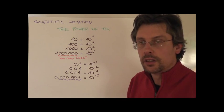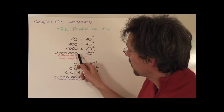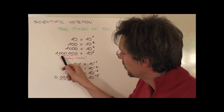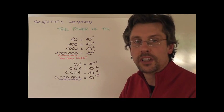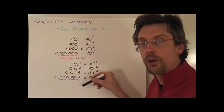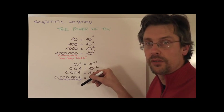And it's very easy, because you just have to count how many times you have to move your decimal point to write to the digit 1. The same works for numbers which are smaller than 1.